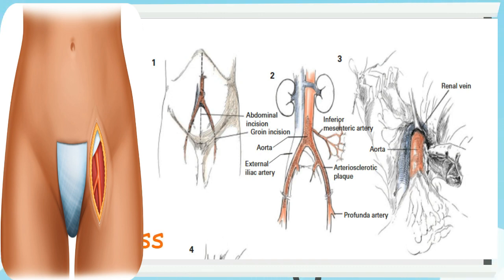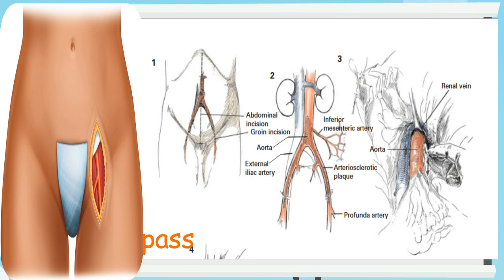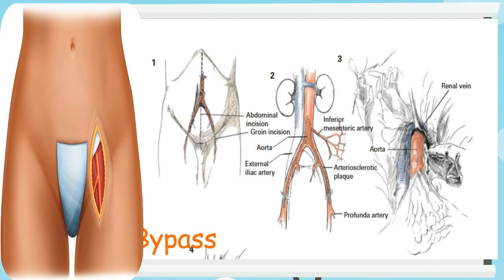A midline incision is made from the xiphoid to the pubis to afford maximum exposure, as shown in Figure 1. The abdomen is explored for the presence of other pathology, and the intra-abdominal arterial tree is carefully assessed.